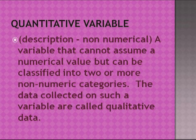A qualitative variable is non-numerical — a variable that can be classified into two or more non-numerical categories. The data collected on such a variable are called qualitative data.